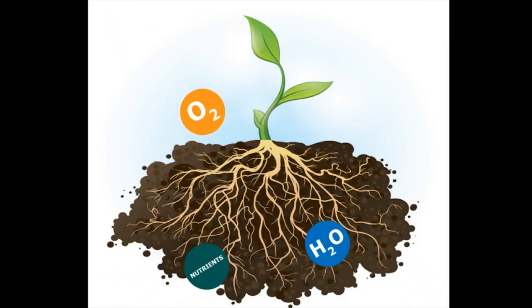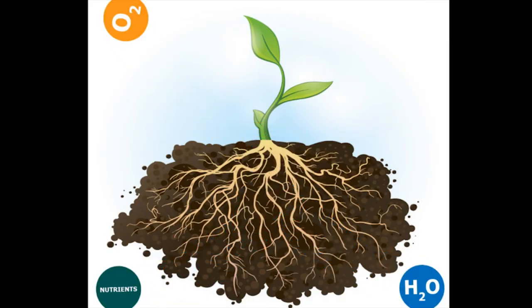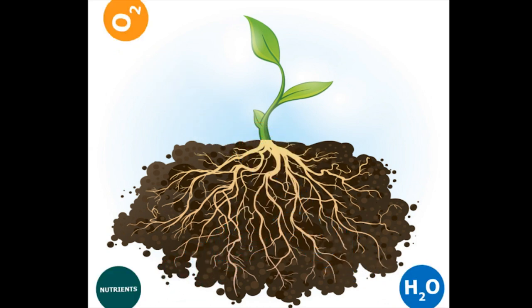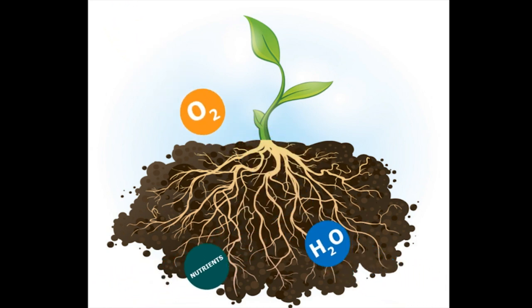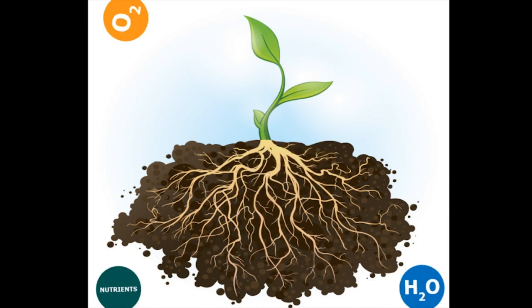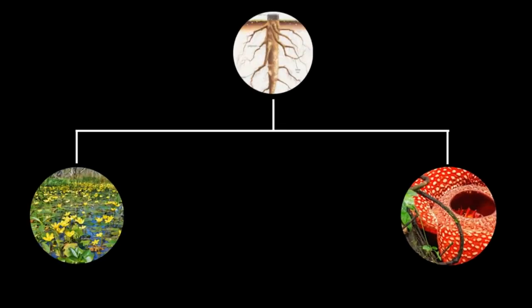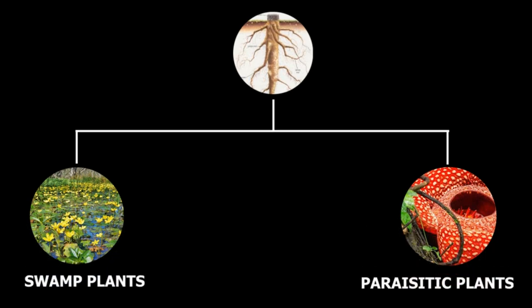Roots are evolved to stay underground and absorb nutrients and water from soil, and oxygen from air through pores in the soil. In this video, we will learn the modifications in roots of plants found in swamps and plants which grow on other plants.